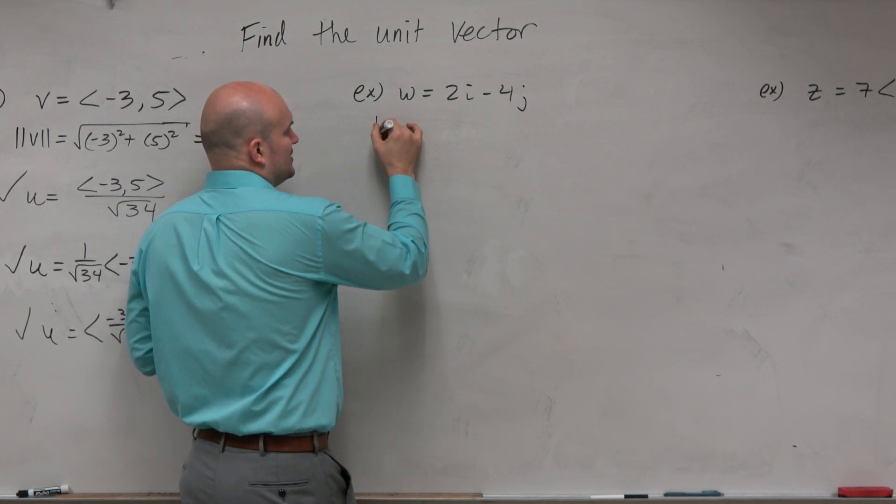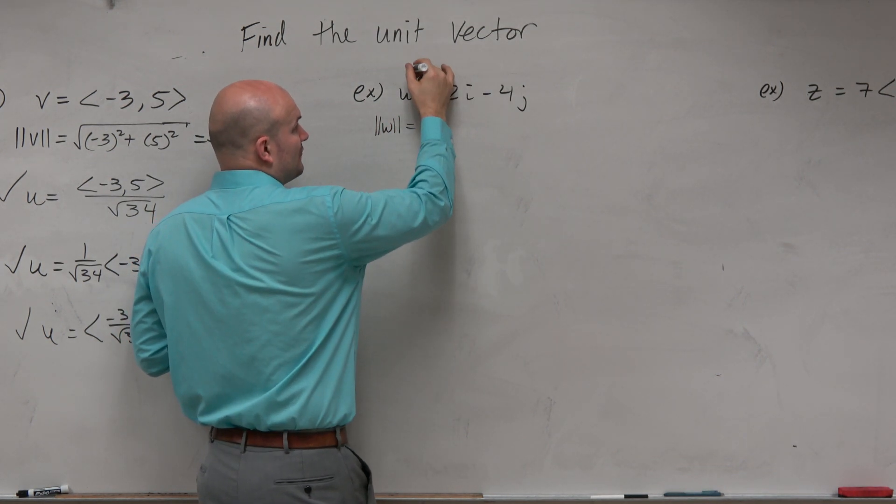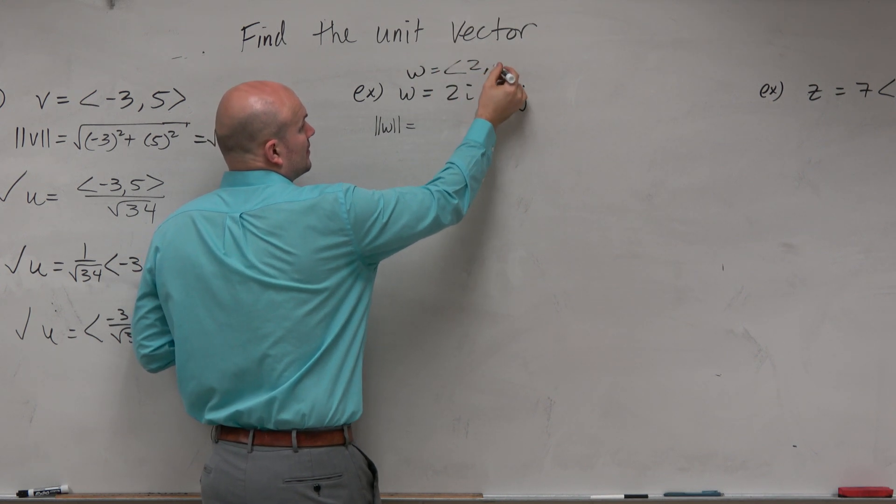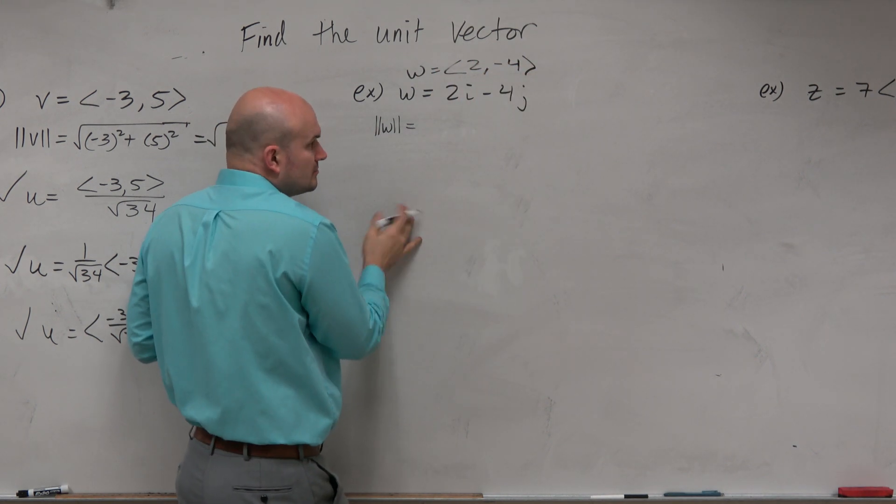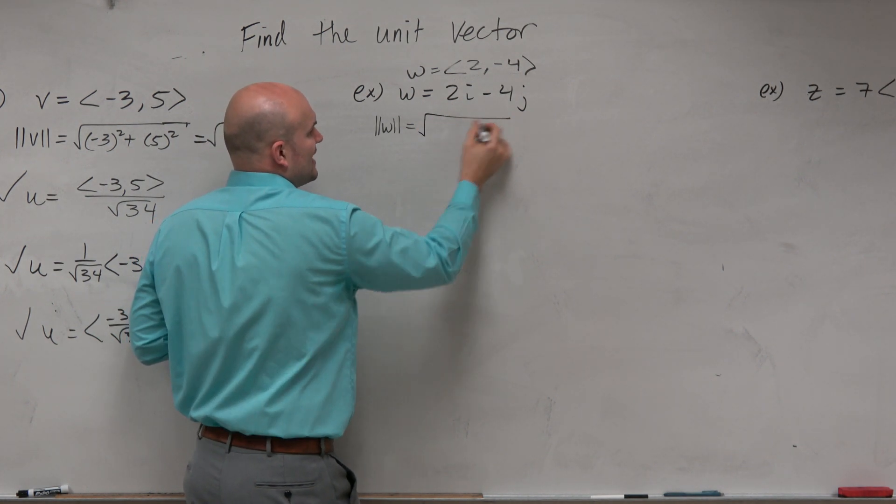If we wanted to find the magnitude of w, we could think of this in its component form. But it doesn't matter, you can leave it in the terms of i and j.